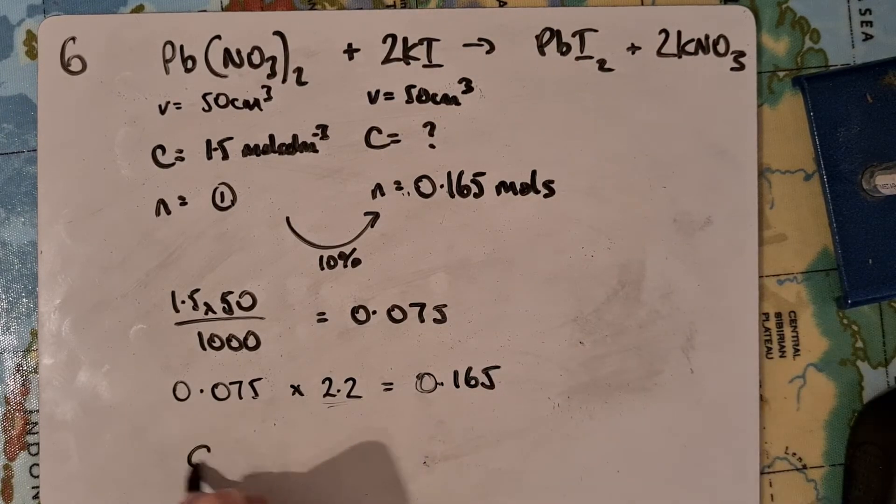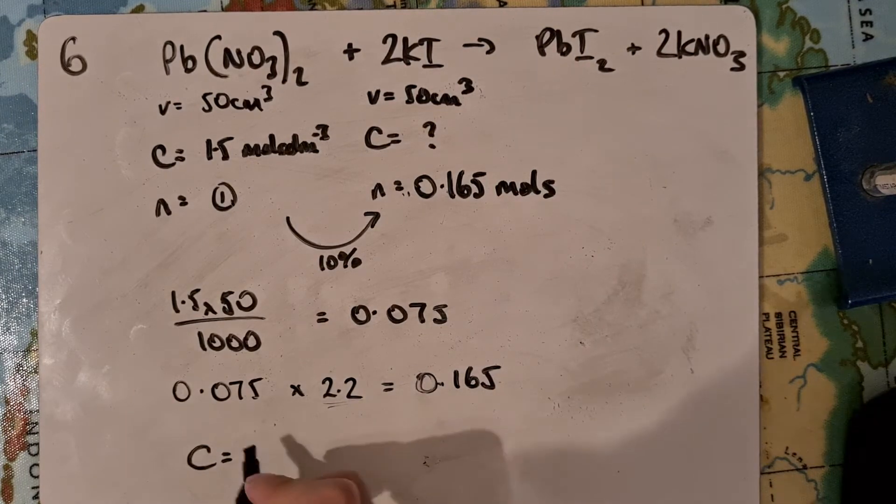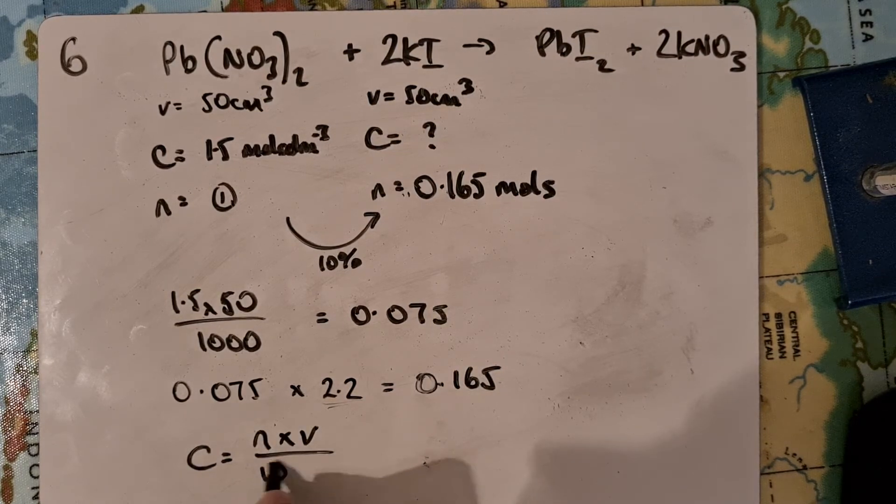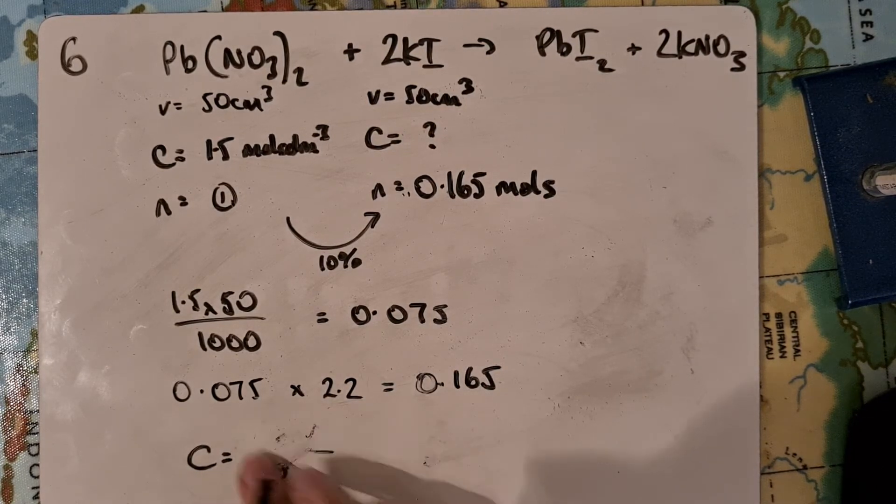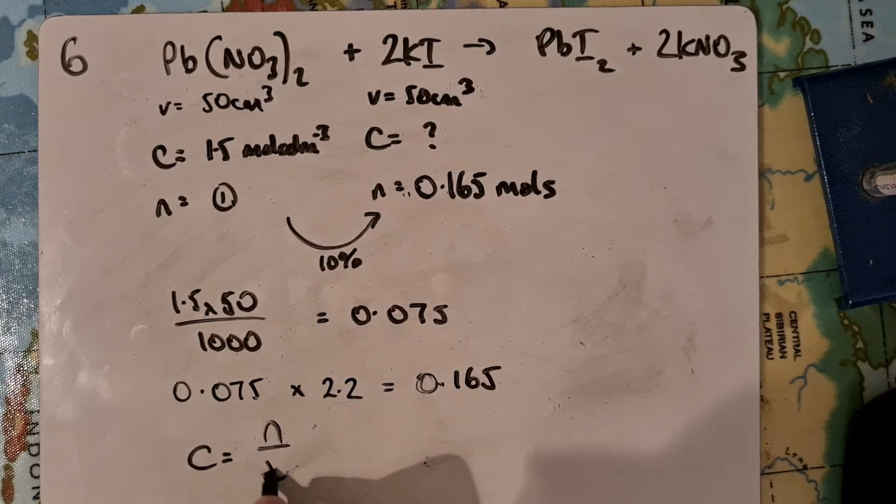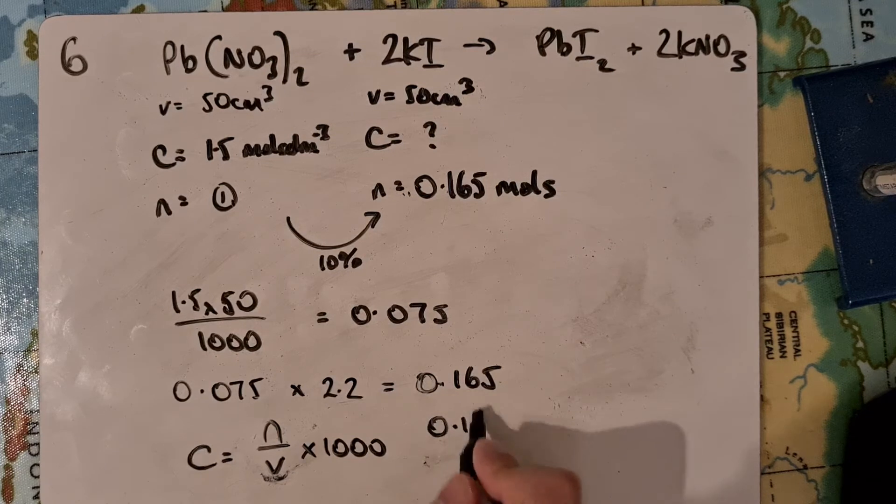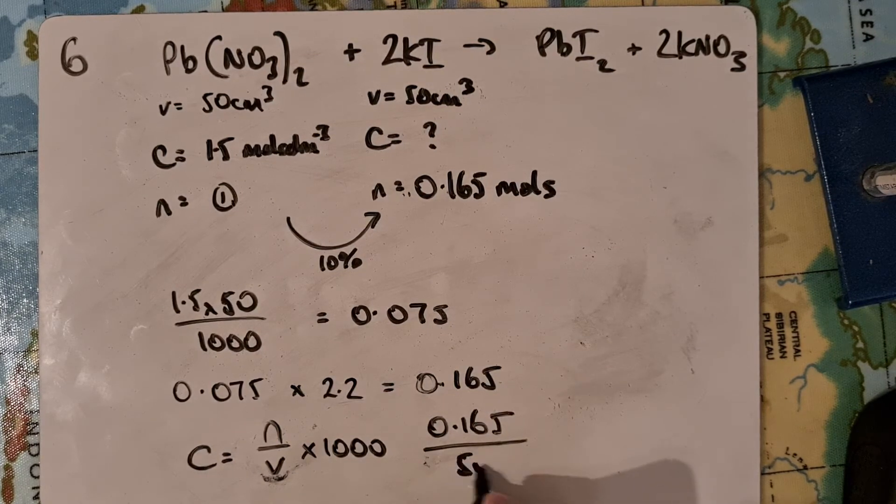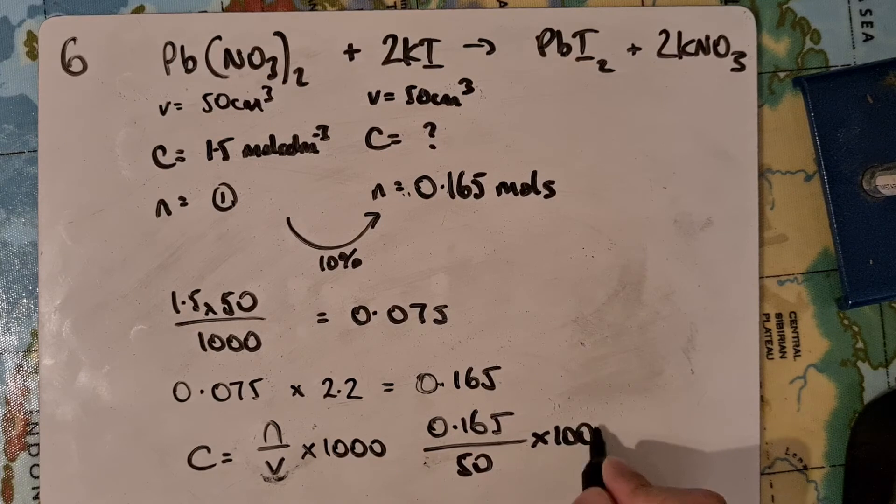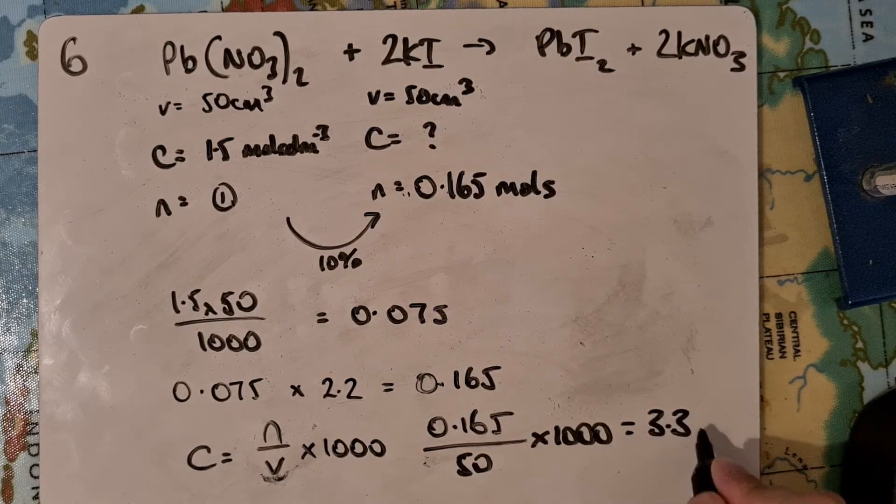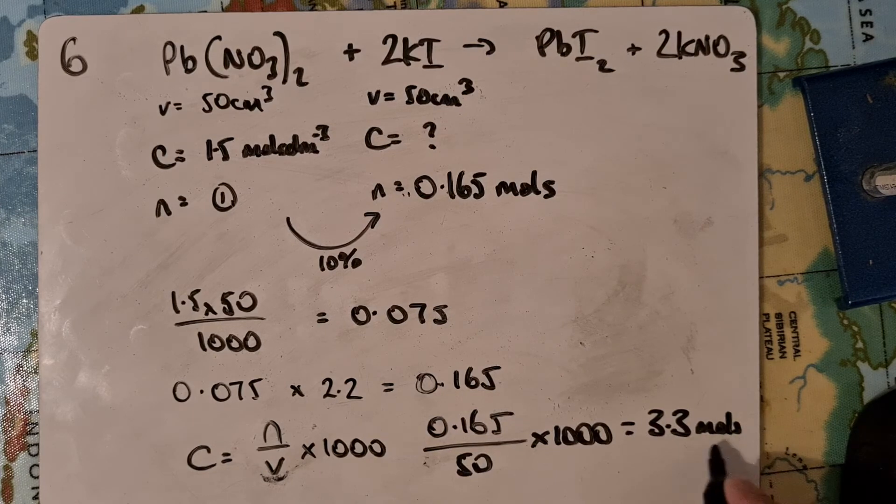Once I've got that, then I can do concentration equals N over V times 1,000. I've got 0.165 over 50 times 1,000, which is going to give me a concentration of 3.3 moles per decimetre cubed.